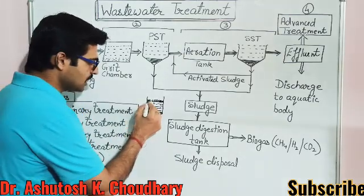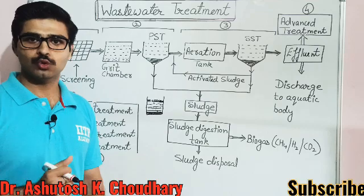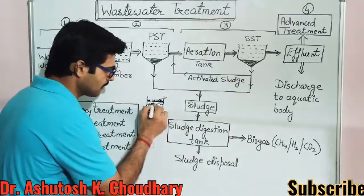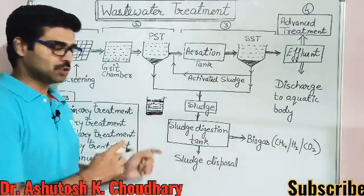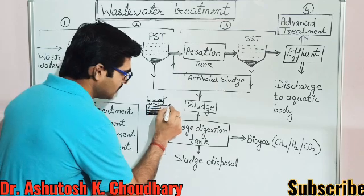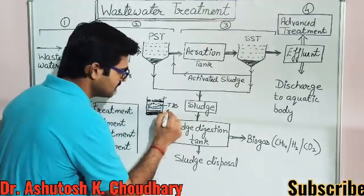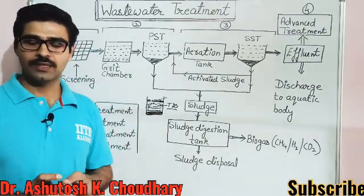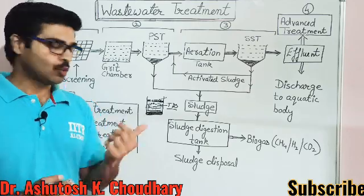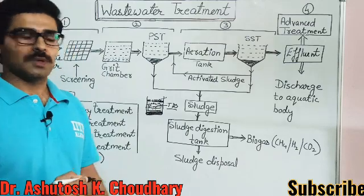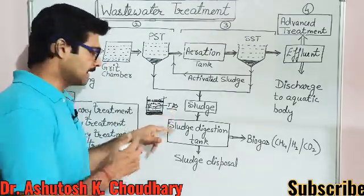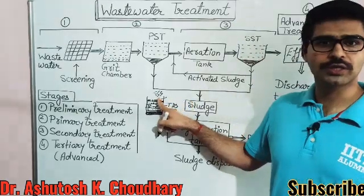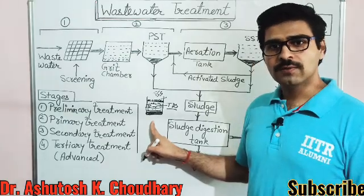Suspended solids are divided into three categories: first, floating; second, settled; and third, those that are neither settled nor floating. The next type of solid is TDS — total dissolved solids. For example, when we add sugar to water, those are dissolved solids. All solids present in dissolved form are called total dissolved solids (TDS), and the solids which are suspended are known as TSS — total suspended solids.